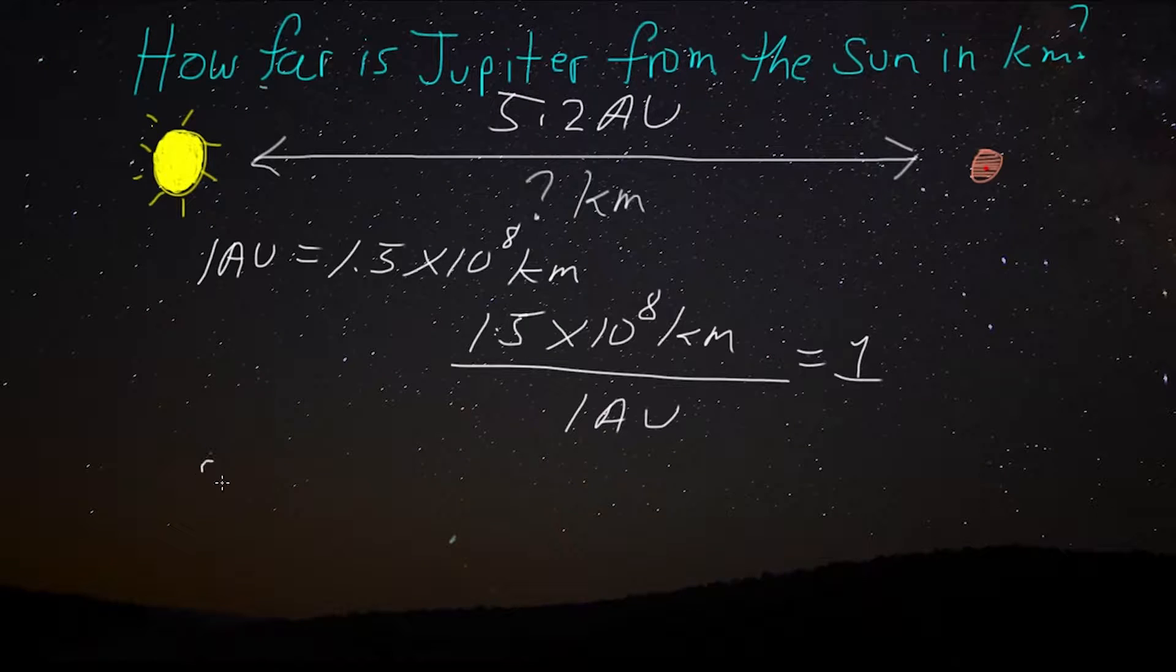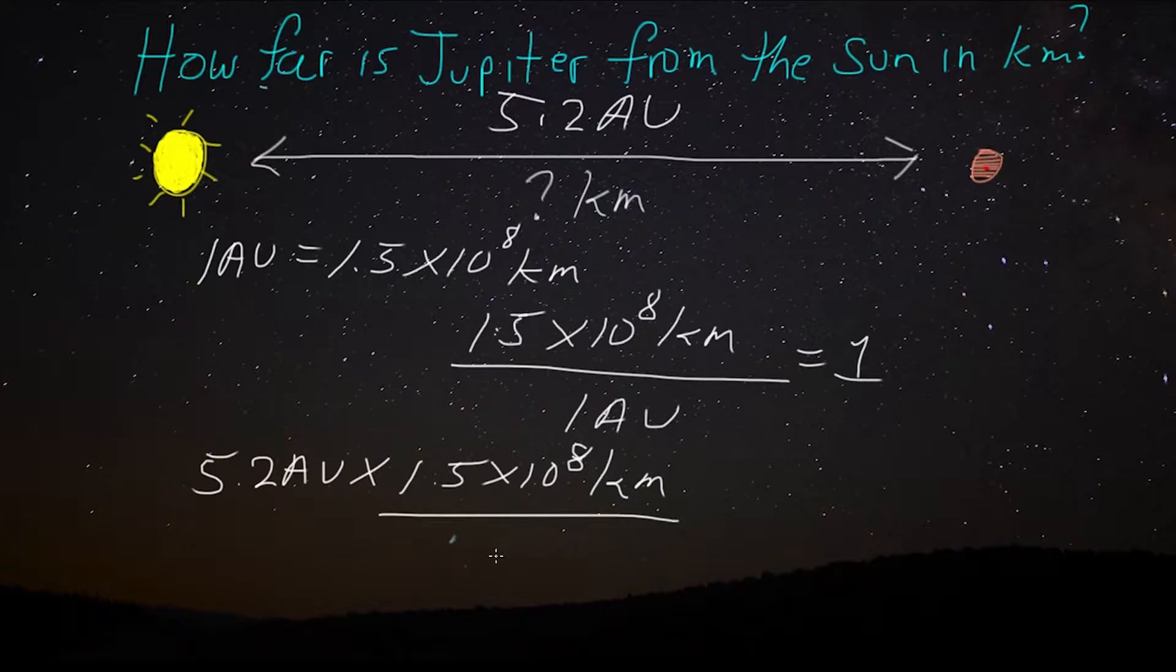So, we can take 5.2 AU and we can multiply it by this representative 1 here. So, we're going to multiply it by 1.5 times 10 to the 8th kilometers per AU. And the reason we do that is because these units cancel. That's right. The AUs can be treated like numbers.